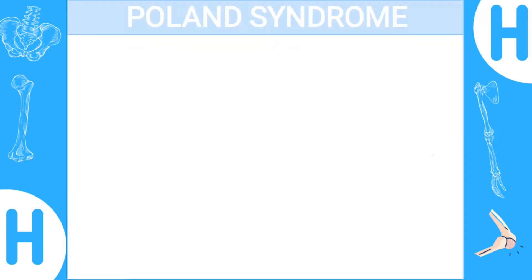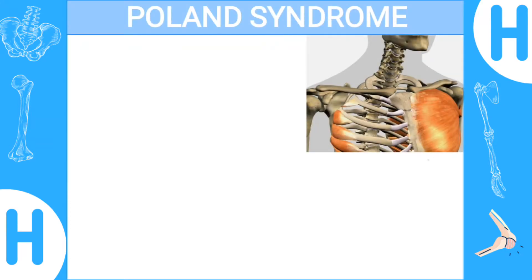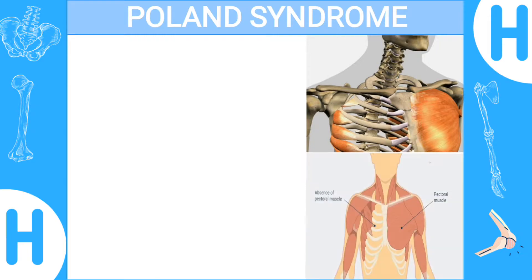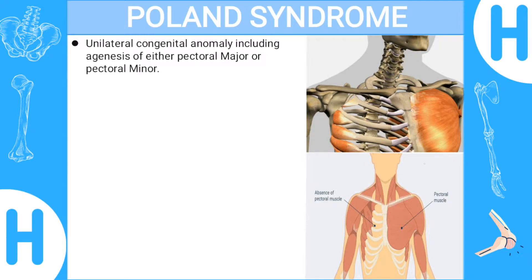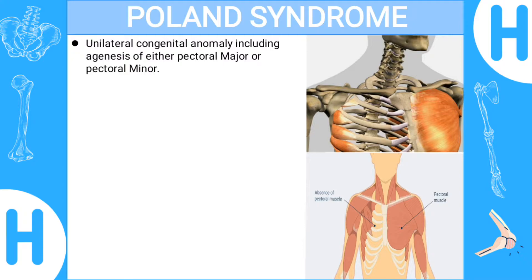Today's topic is Poland Syndrome. Poland Syndrome is basically a unilateral congenital anomaly of upper limb development, including agenesis of either pectoralis major or pectoralis minor. In this picture you can see the pectoralis major is absent. Agenesis is basically a developmental abnormality — a lack of any part of the body.